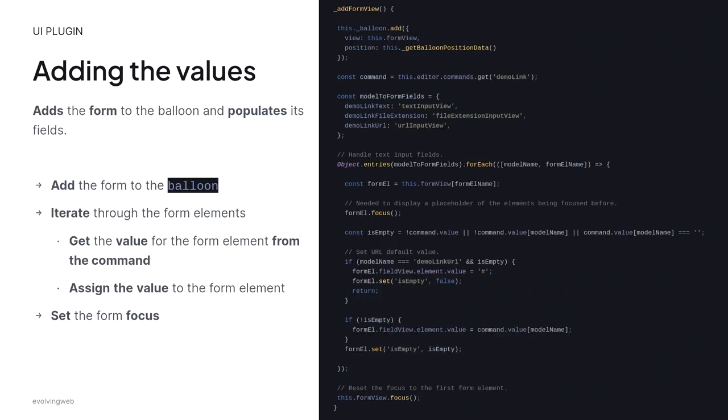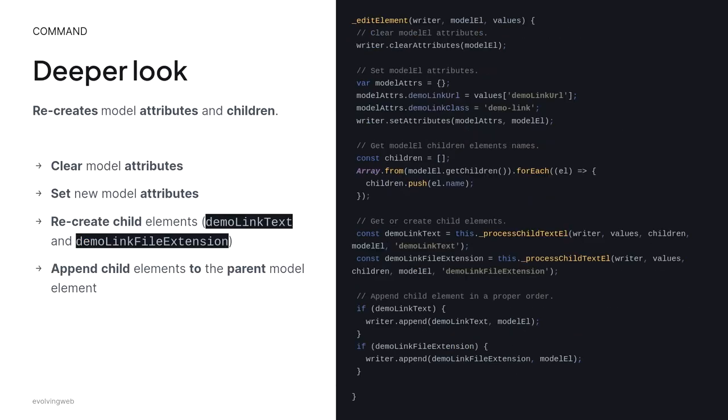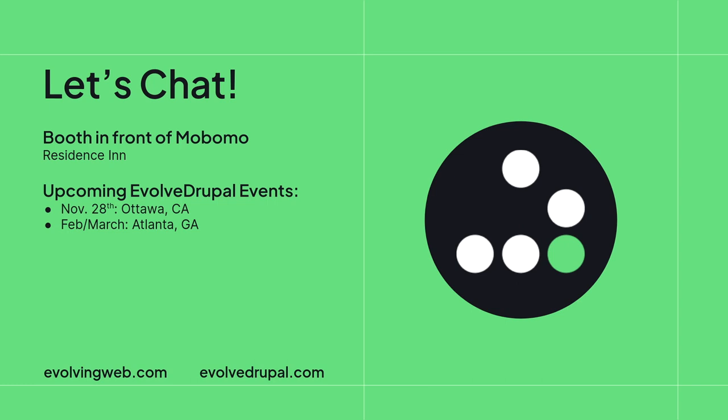If there are no other questions, let's promote our two events made by Evolving Web. The first is going to be in Ottawa at the end of this month, and another one is going to be next year in Atlanta, Georgia. Save the date!